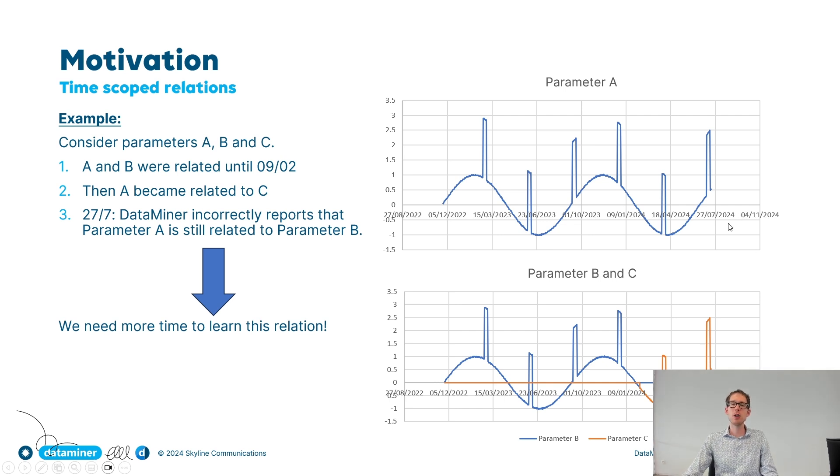Maybe they switched off a certain device and started another device. And so as of this time, say the 9th of February, parameter A and C are related and parameter A and B are no longer related. Now assume that here in July you would ask relation learning which parameter is related to parameter A. Well, the algorithm will then falsely return parameter B. Why? Because it has learned from the past that parameter A and B were related, and it didn't have time enough yet to learn that this relation isn't there anymore.